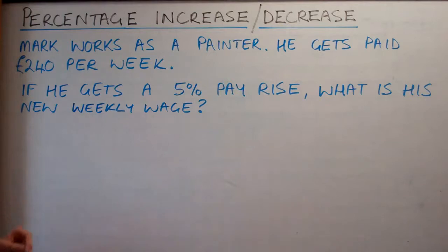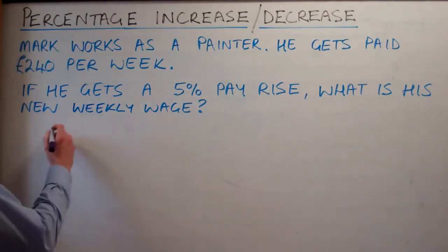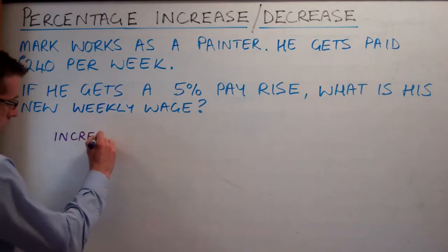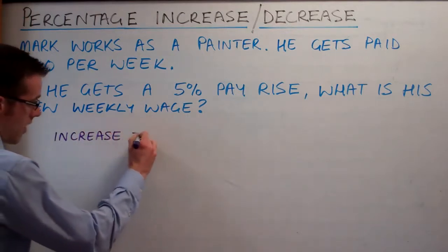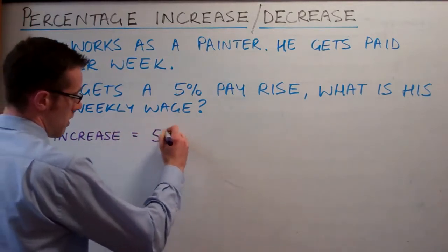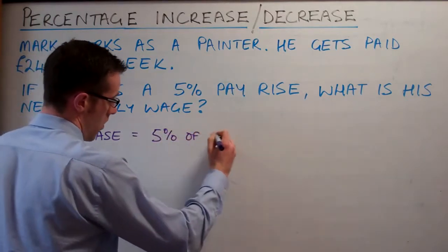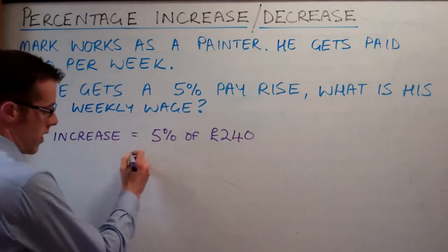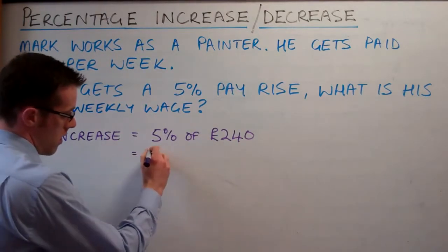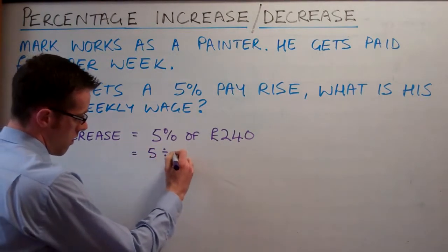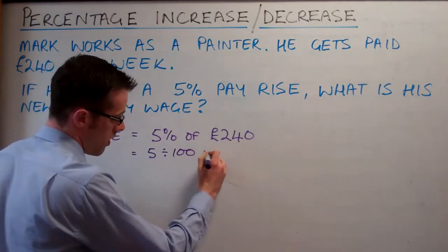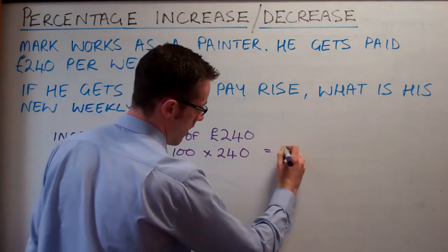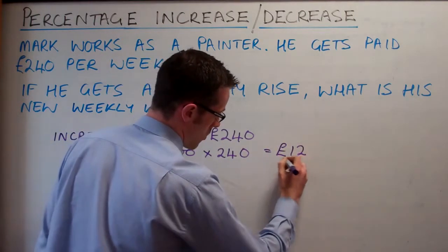So how do we work this out? First of all we have to figure out the increase. His increase is 5% of £240. Working that out: 5 divided by 100, times £240, equals £12.